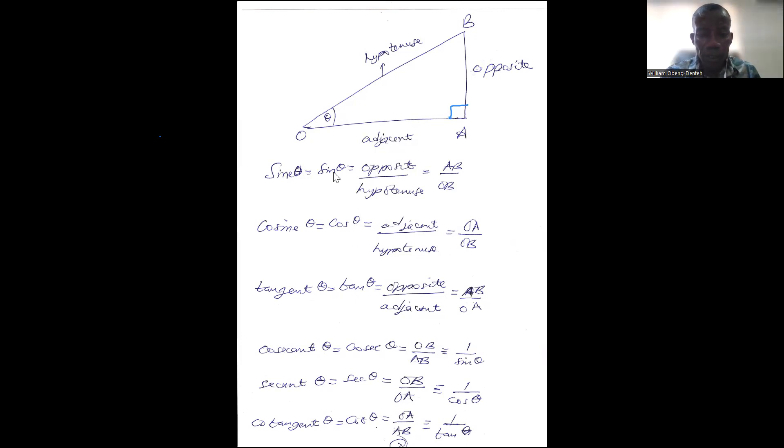Remember, sine theta is opposite over hypotenuse. Cos theta is adjacent over hypotenuse. Tan theta is opposite over adjacent. Cosec theta is one over sine theta. Sec theta is one over cos theta. Cot theta is one over tan theta.